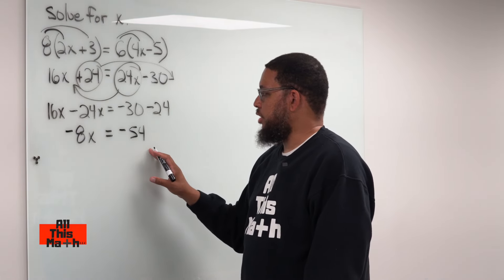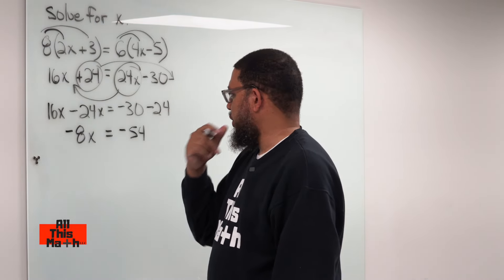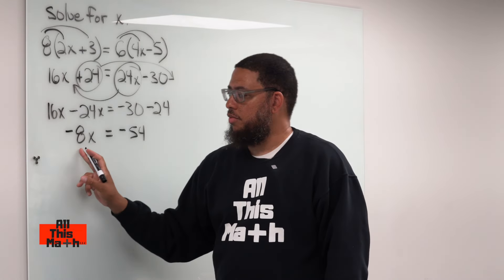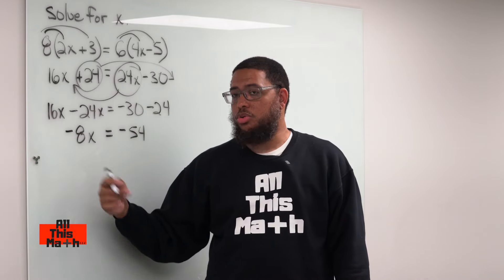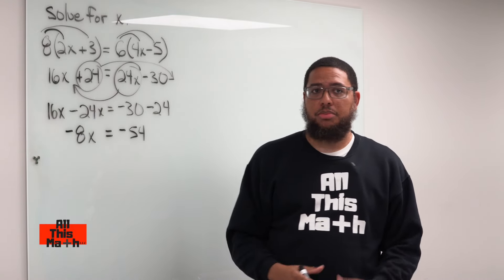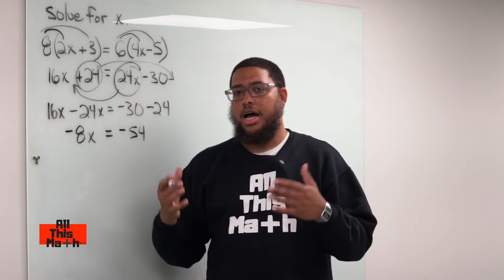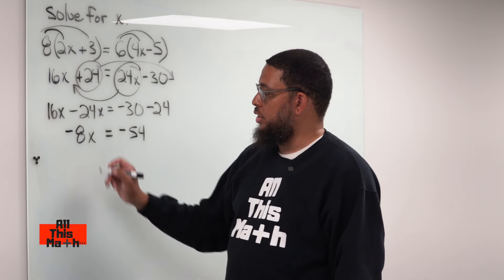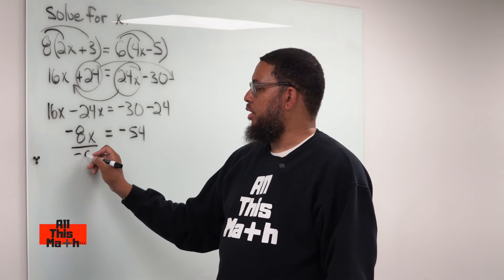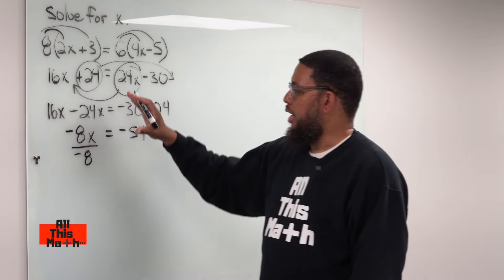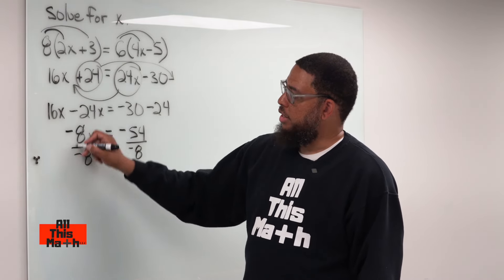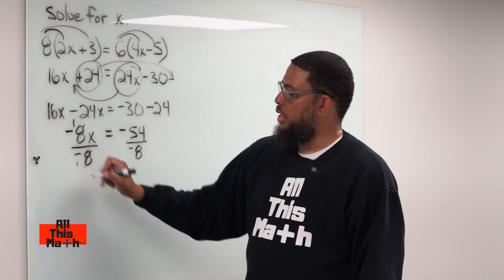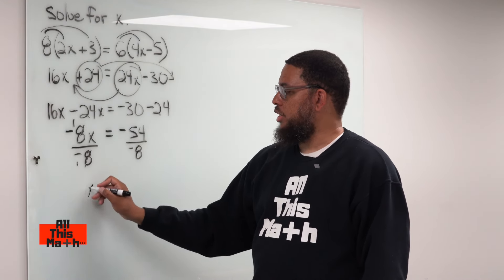So negative 8x equals negative 54. Now what we're going to do is try to get x by itself. So we have to get rid of this negative 8 by doing the opposite operation from what the negative 8 is doing with the x. Negative 8x means negative 8 times x. The opposite of multiplication is division. So that means we're going to divide by negative 8 on the left-hand side, and in order to keep things balanced, we must also divide by negative 8 on the right-hand side. So negative 8 divided by negative 8 gives us 1, which is 1x or just x.